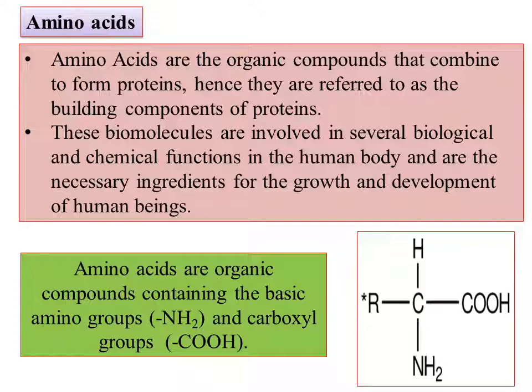Amino acids are the organic compounds that combine to form proteins. Hence they are referred to as the building components of protein. If you combine amino acids in a particular sequence, they form a huge molecule called a polymer. That polymer is nothing but protein. This is a necessary ingredient for the growth and development of human beings.